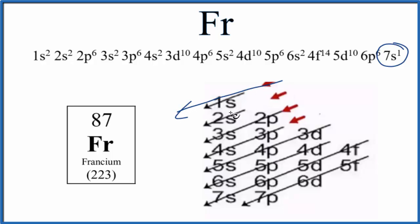So we start out, we go to 1S, and S can hold up to 2. So we have 2, that's full. We go to 2S, that holds 2. 2S is full. 2P, P can hold up to 6. So we fill that up with 2P6. We've used 10 electrons so far.